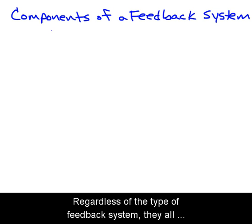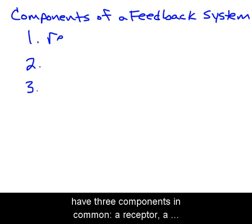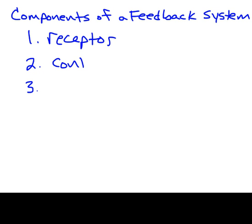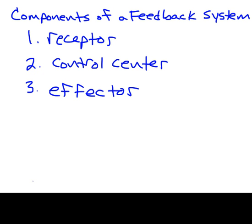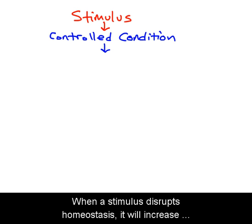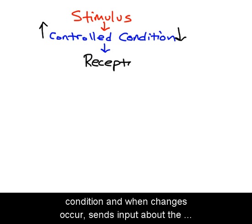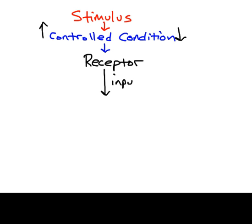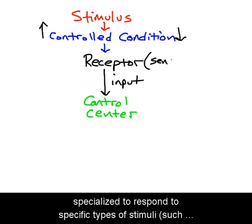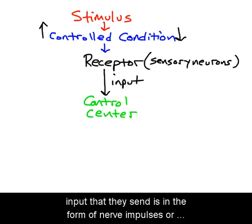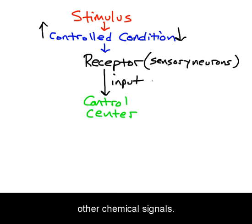Regardless of the type of feedback system, they all have three components in common: a receptor, a control center, and an effector. When a stimulus disrupts homeostasis, it will increase or decrease the controlled condition. A receptor constantly monitors the controlled condition, and when changes occur, sends input about the change to the control center. Receptors are usually sensory nerve cells specialized to respond to specific types of stimuli, such as chemical concentration or temperature, and the input they send is in the form of nerve impulses or other chemical signals.